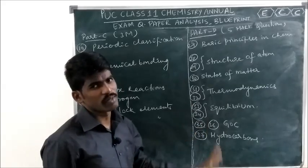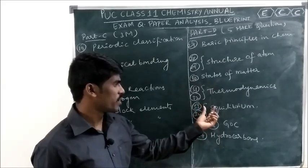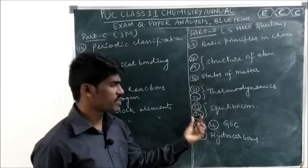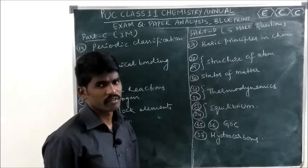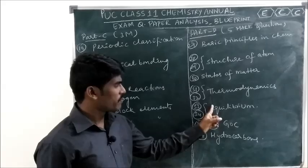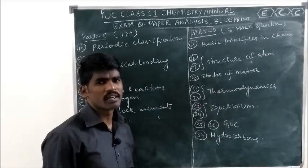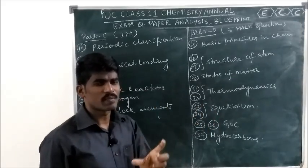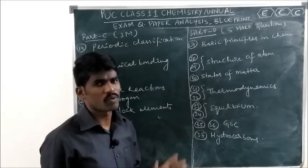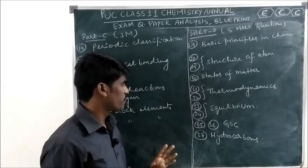Questions 33 and 34 are both from the Equilibrium chapter. Question 33 is Chemical Equilibrium — the maximum probability is to state Le Chatelier's principle and apply it with one example. Question 34 is Ionic Equilibrium.